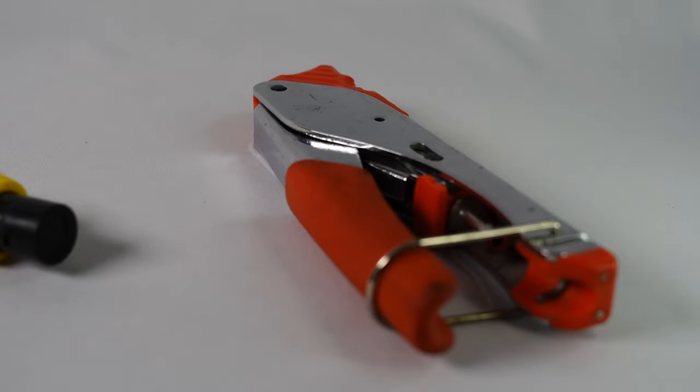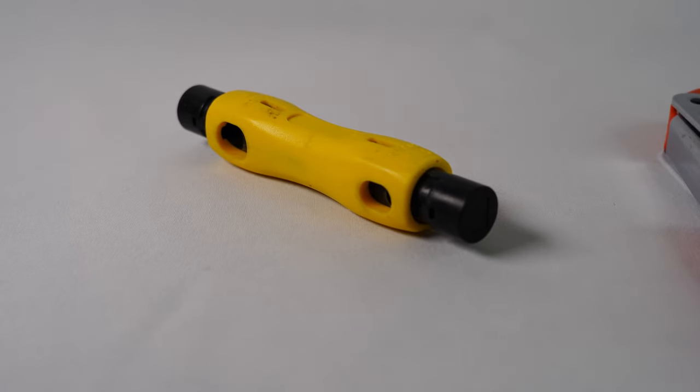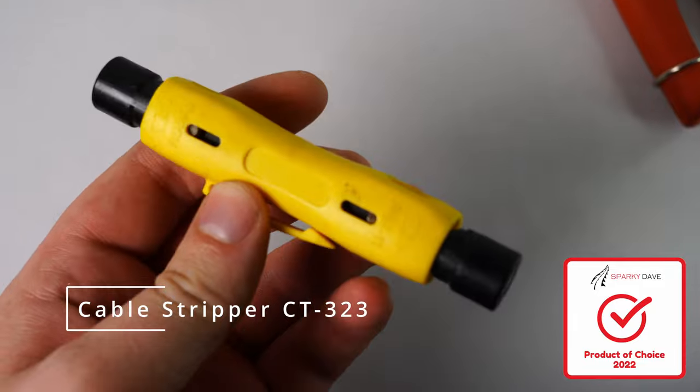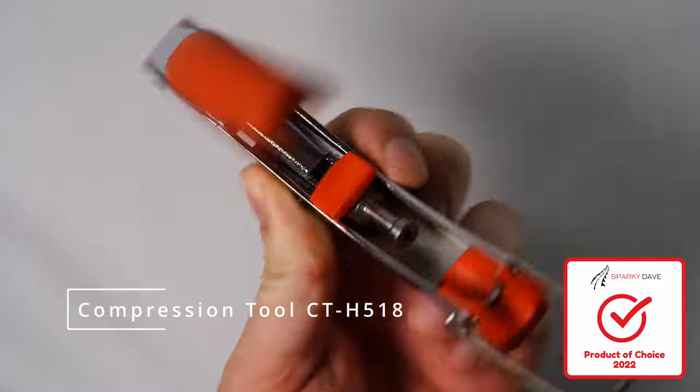In order to work efficiently with RG6 cable I recommend using the following two tools. Firstly a coax cable stripper and secondly a RG6 F type compression tool.